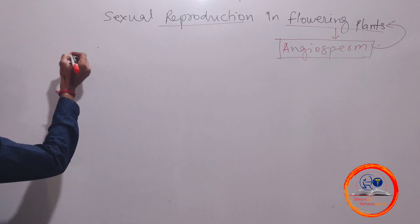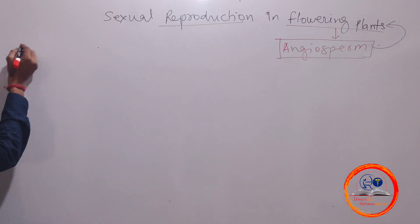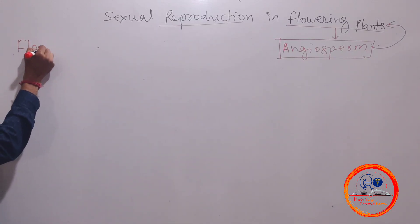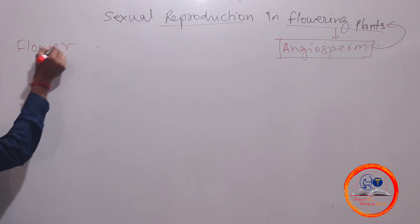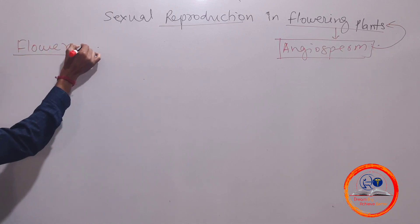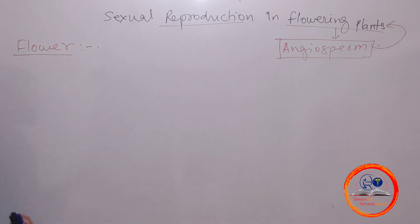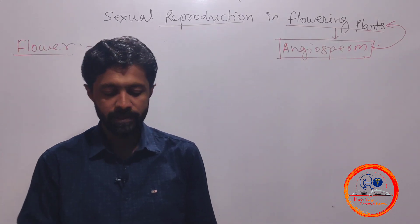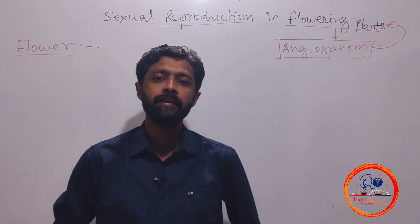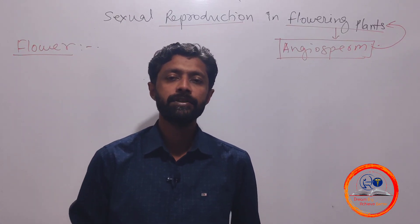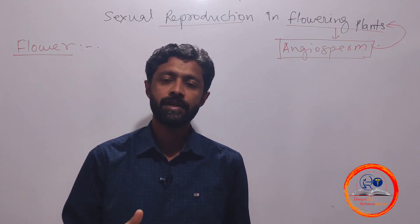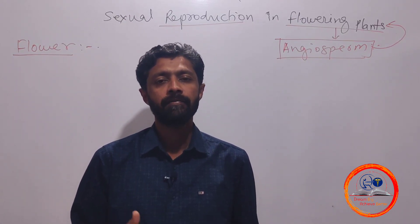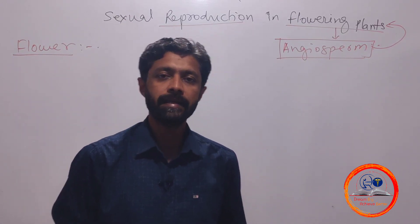For performing sexual reproduction, plants need an organ which we call a flower. There are several other organs — root, stem, leaf, flower, fruit, and seed.